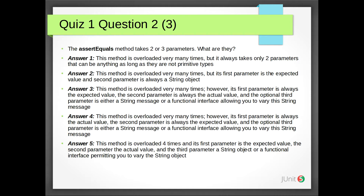Answer 3: This method is overloaded very many times. However, its first parameter is always the expected value, the second parameter is always the actual value, and the optional third parameter is either a String message or a functional interface allowing you to vary the String message.